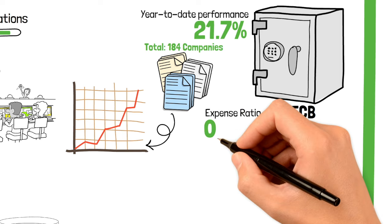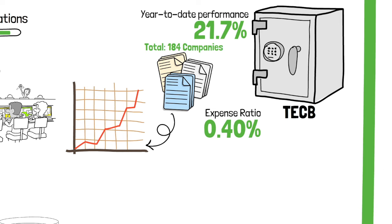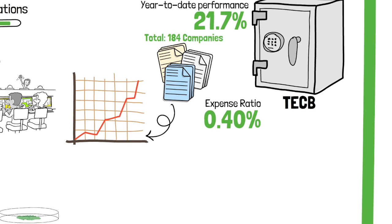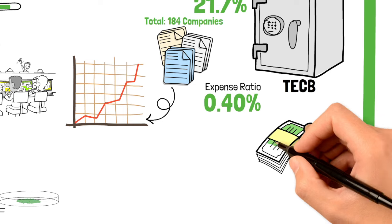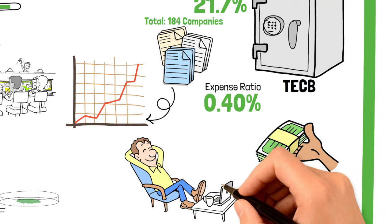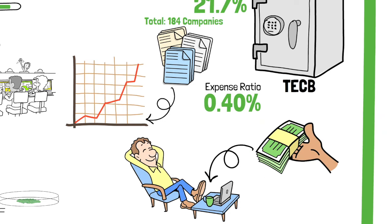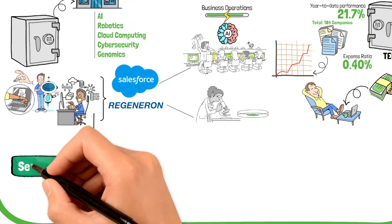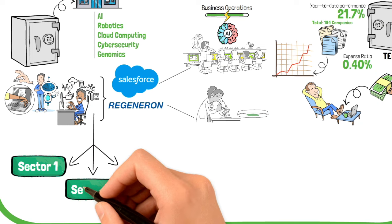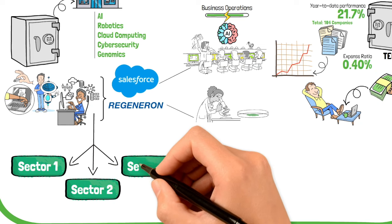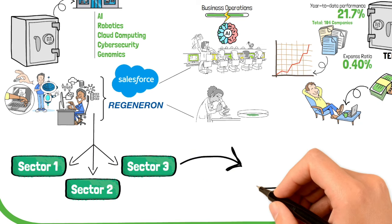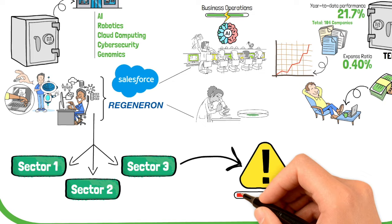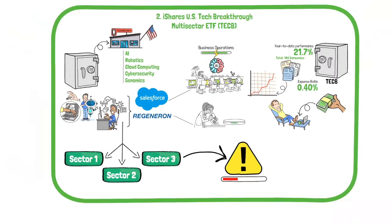TECB's expense ratio is 0.40 percent, which is relatively low compared to other tech-focused ETFs. This low fee ensures that more of your investment returns stay in your pocket, enhancing the overall growth of your portfolio. The diversity of TECB's holdings helps mitigate risk by spreading investments across multiple tech sectors. This broad exposure reduces the impact of any single company's poor performance on the overall ETF.